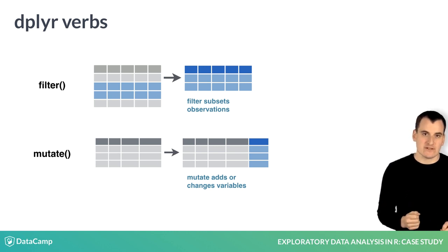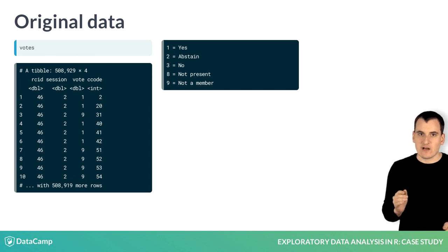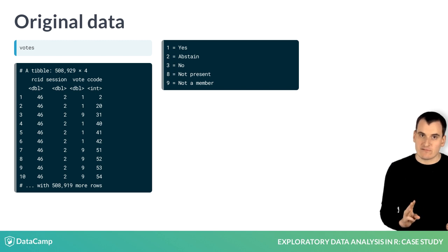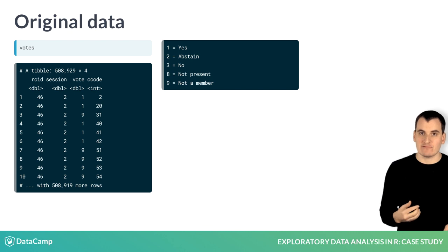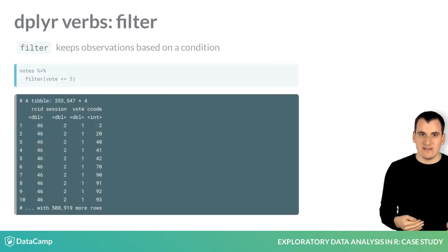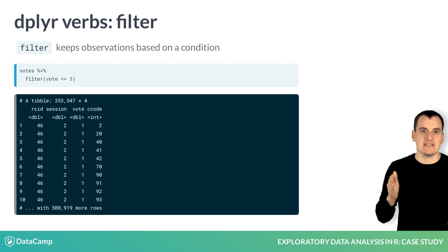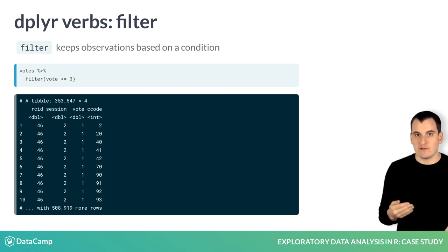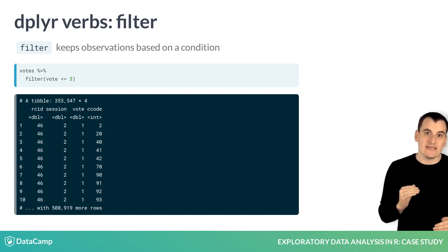Here's an example of each. In our original data set, the vote column has five possible values: one for yes, two for abstain, three for no, eight meaning the country wasn't present, and nine meaning the country was not yet a member. We only care about the first three values — yes, no, and abstain. To remove the others, we pipe the data set into the filter function. Within that filter, we describe a condition: vote is less than or equal to three. The resulting data frame is smaller; it only kept the observations where our condition was met.